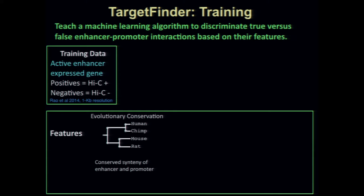The features we used to predict interactions were of three general types. First, we looked at evolutionary conservation — not of the sequence per se, but of the co-localization or synteny of the enhancer and the promoter. If we look across evolutionary time, is there a conserved sequence for that enhancer across species and does it stay at a similar distance to that gene? This had been shown to be very predictive of eQTLs, but it turned out not to be particularly predictive for us on this problem.